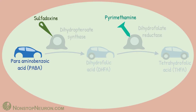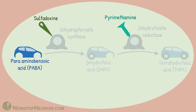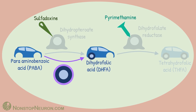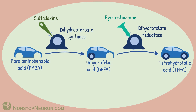This combination also tackles the problem of resistance. If the parasite develops resistance to one drug, the other drug enters the situation. For example, if the parasite produces a mutated dihydrofolate reductase rendering pyrimethamine ineffective, we still have sulfadoxine working and preventing the synthesis of tetrahydrofolic acid. Similarly, if it develops a mutated dihydropteroate synthase rendering sulfadoxine ineffective, pyrimethamine still works. It is very unlikely that the parasite will come up with mutations in both enzymes together, so resistance is much less of a problem when both drugs are given together.